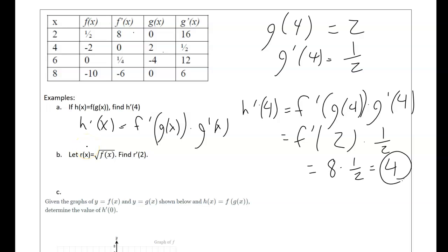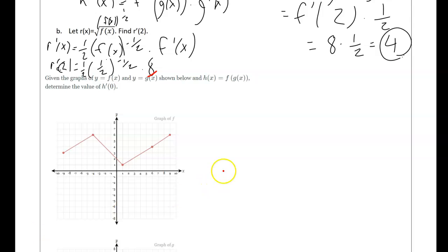Example b is similar, although I have the square root in here. Just like we've done before, I'm going to rewrite that as f of x to the one half power. Then my r prime of x, I can do power rule: it'd be one half f of x to the negative one half times f prime of x. So if I'm using r prime of 2, it's going to be one half times f of 2 to the negative one half times f prime of 2, which is 8. Then you could simplify that—the key here is I multiply by that inside derivative again.